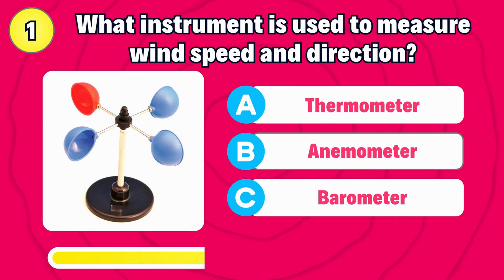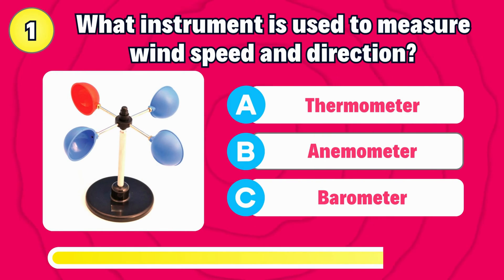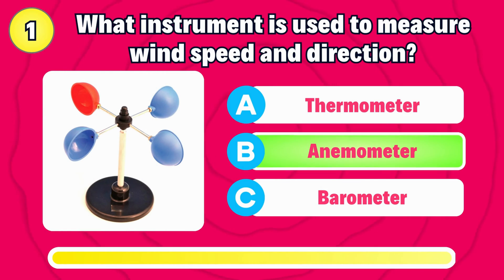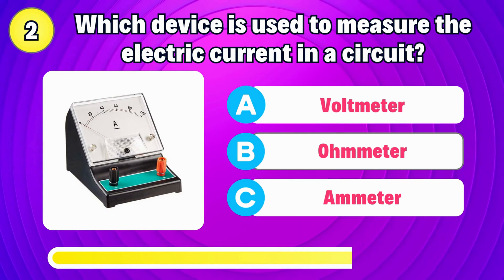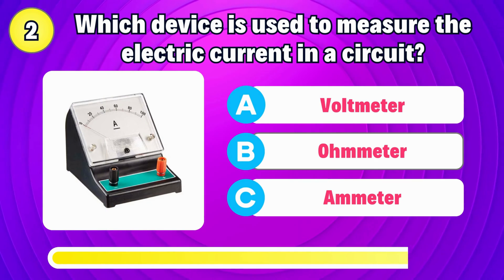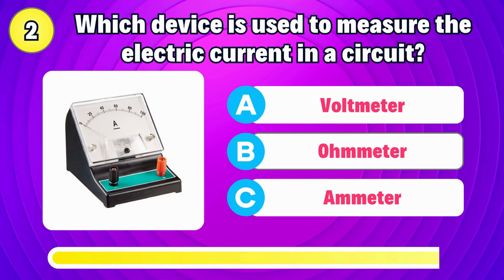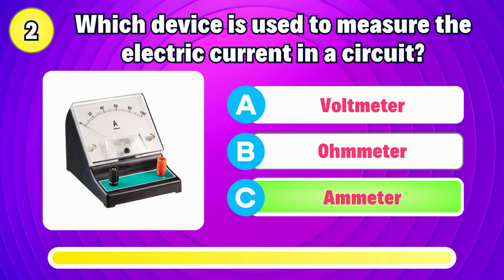What instrument is used to measure wind speed and direction? The answer is anemometer. Which device is used to measure the electric current in the circuit? The answer is ammeter.